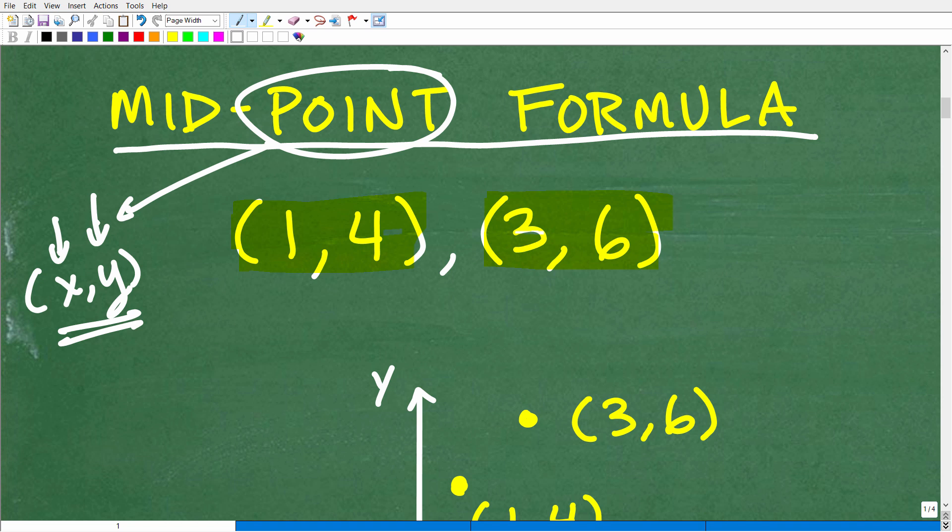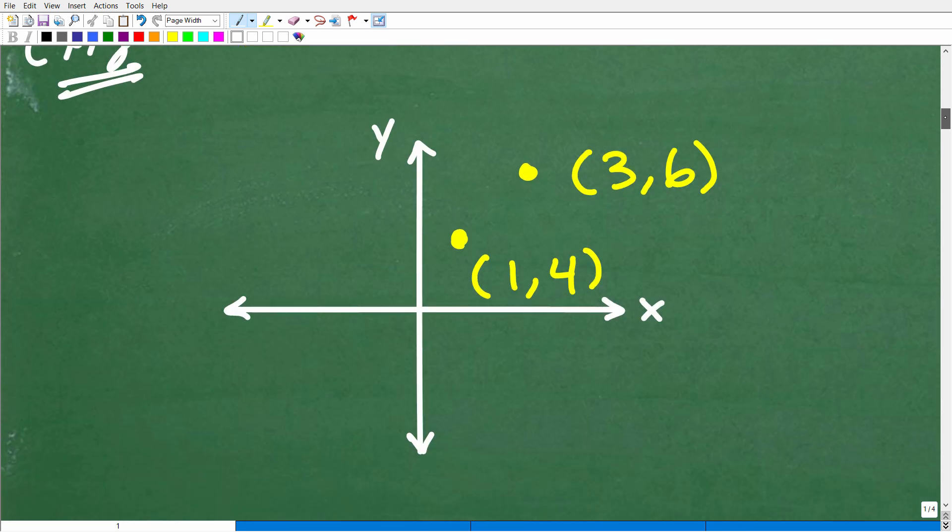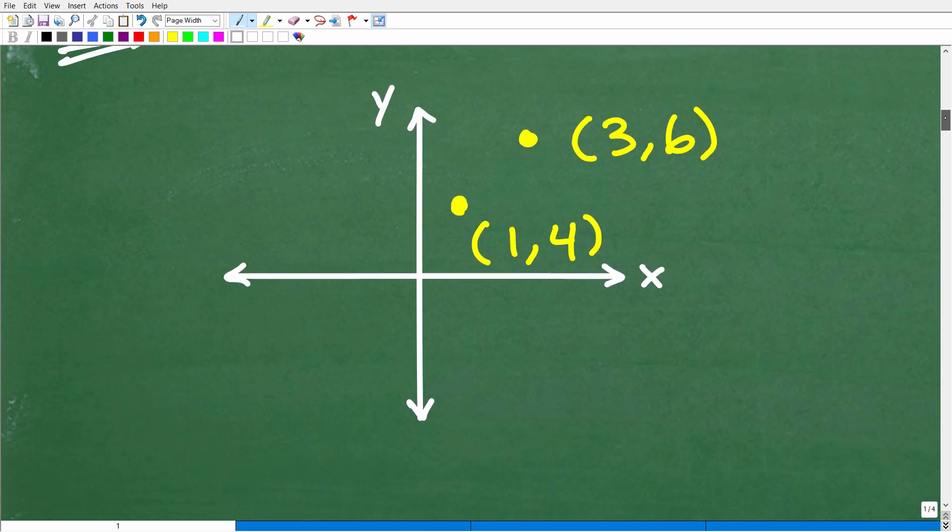coordinate, or point. They're basically synonymous. But the midpoint formula is a formula that tells us the point that's in between or midway between these two points. Let's go ahead and look at these points graphically, and we'll get a better sense of what the midpoint formula is asking us.